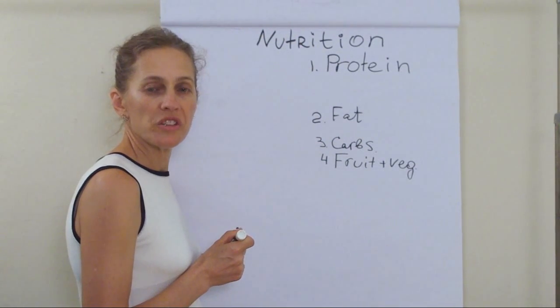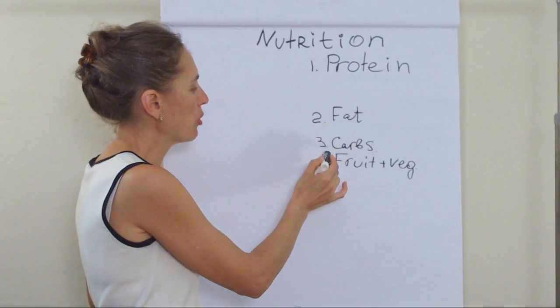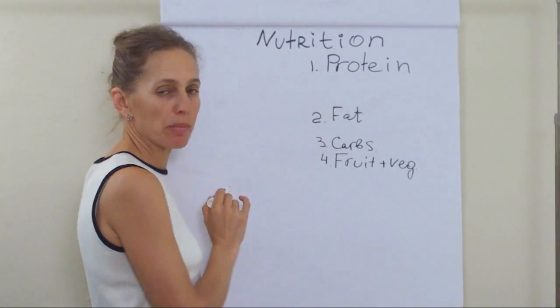Nutrition. All food that we eat could be divided into four big categories: protein, fat, carbohydrates, and fruits and vegetables.